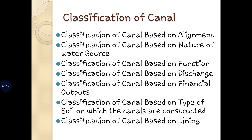Next is the classification of canal. Classification of canal is based on: alignment of the canal, the nature of the water source, the function of the canal, the discharge flowing through the canal, the financial output, the type of soil on which the canal is constructed, and the provision of lining — whether lining is provided or not. Let us see each classification one by one.